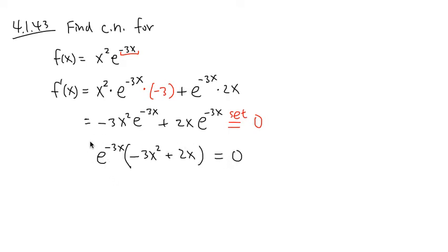And here we have e to the negative 3x times this polynomial equal to 0. Notice that e to the negative 3x can never equal 0, so you don't need to consider this at all. We just have to solve this part.